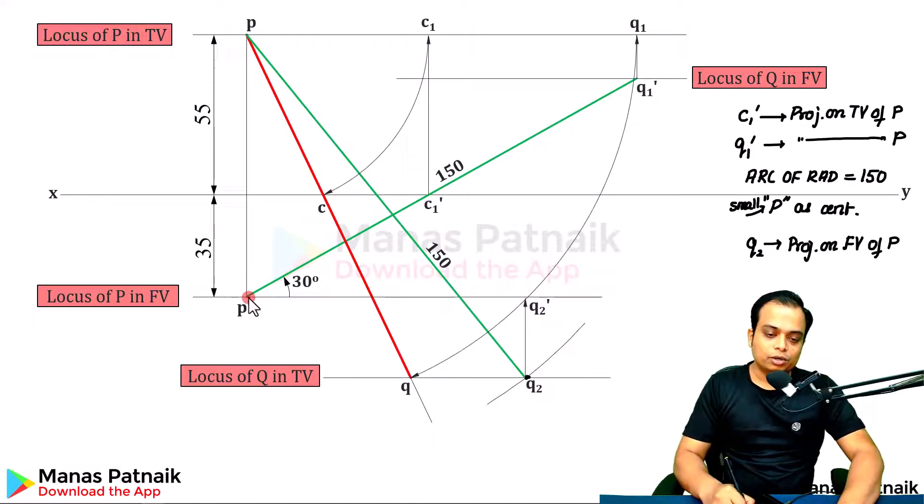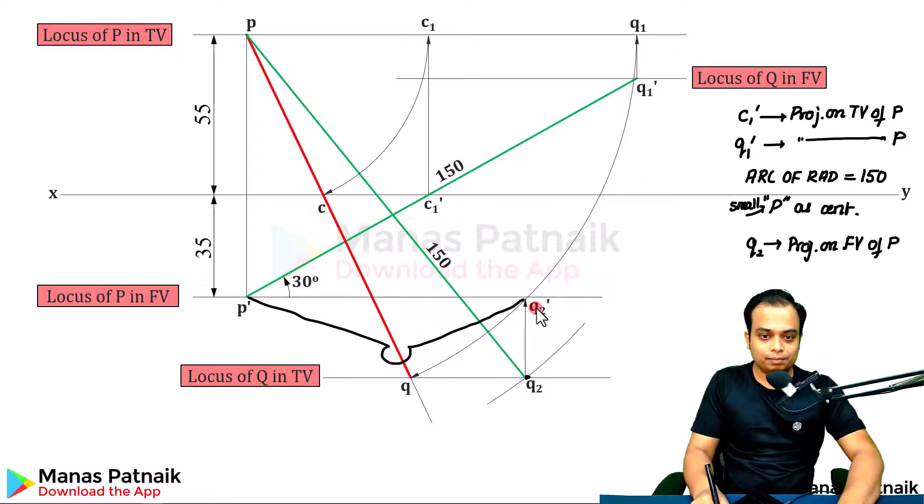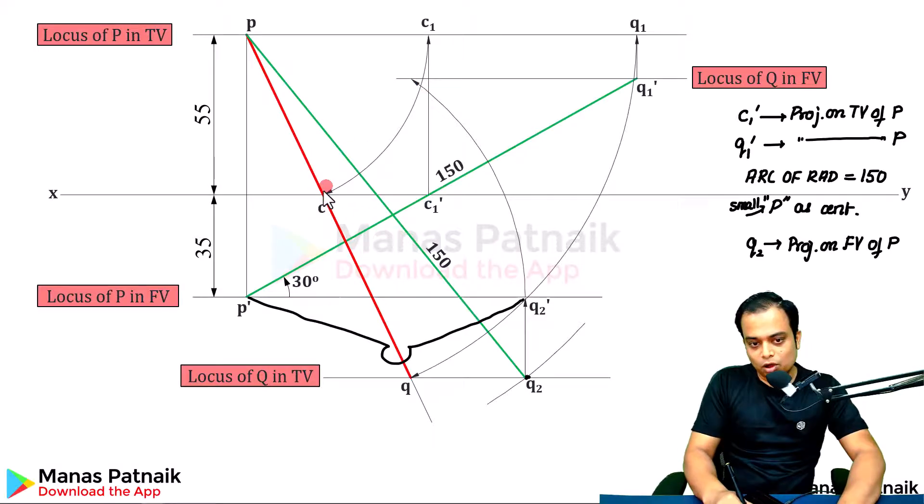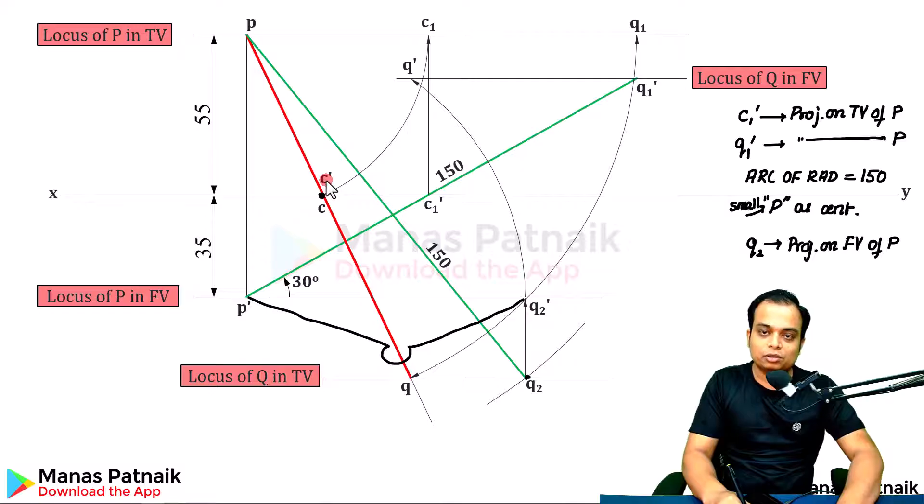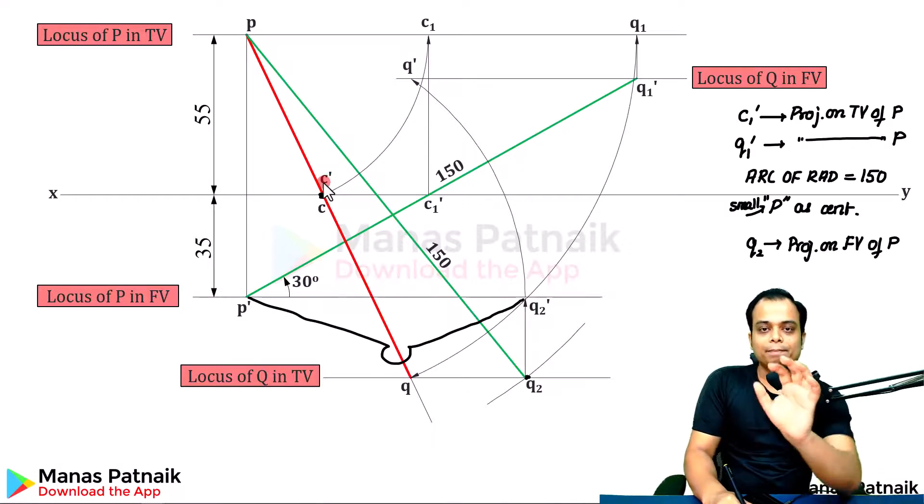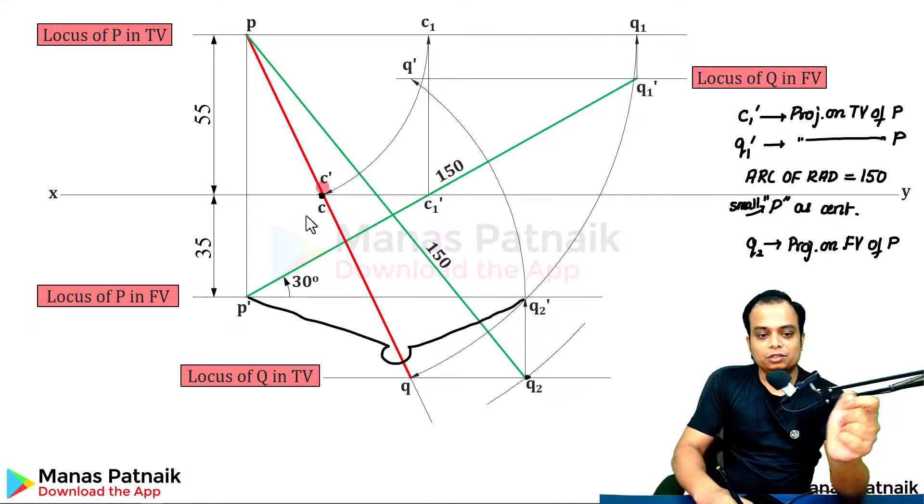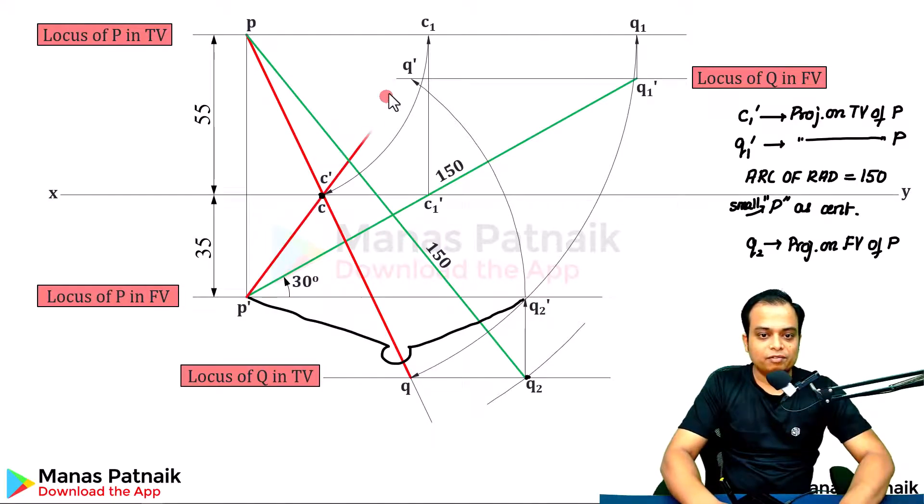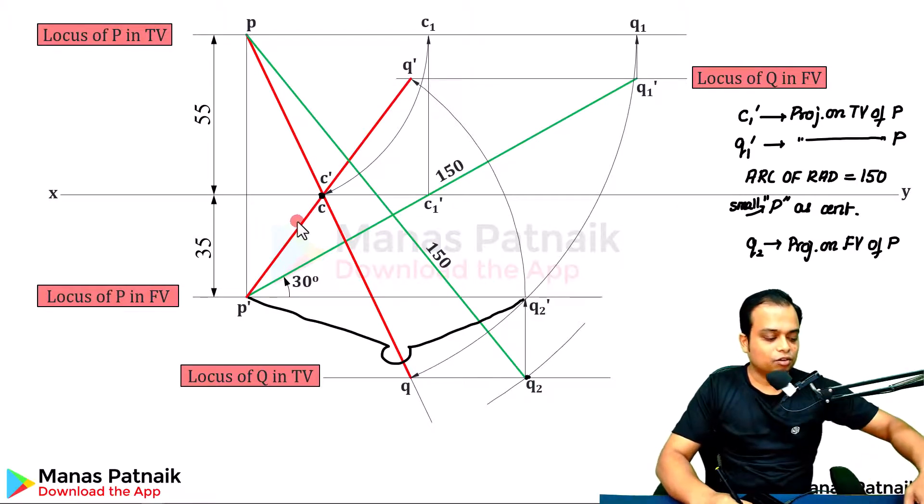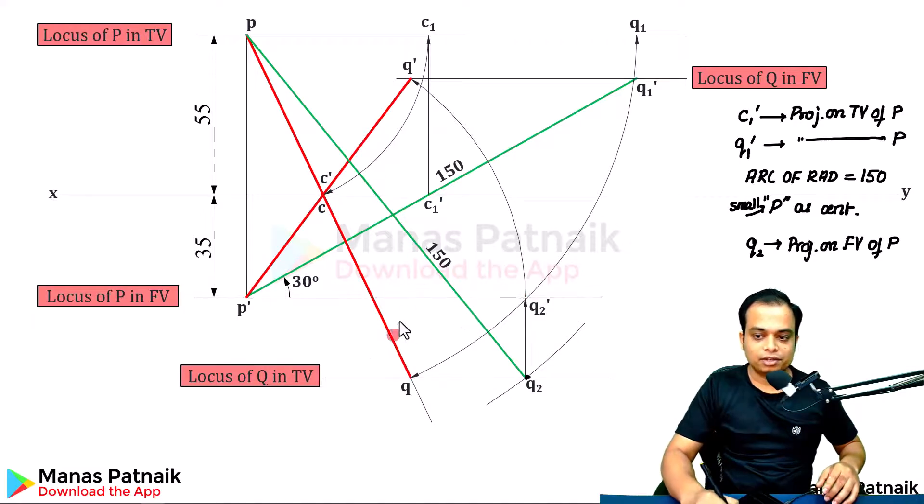You need to take this much from P dash to Q2 dash, a radius in your compass. Rotate. Where is the front view of Q? Here is the front view of Q. Rotate until it intersects somewhere here. This is going to give you Q dash. Notice that I've automatically marked this very point as C dash also. You know very well that C point is a point on the reference line. If C is here, the top view is here, the front view will also be coincident. Simply connect P with C dash and with Q dash. This is your final front view.